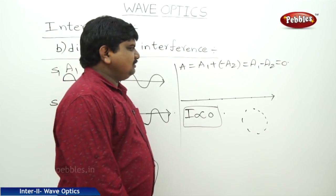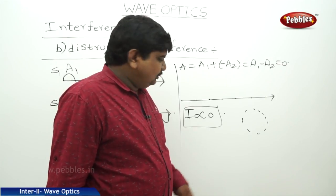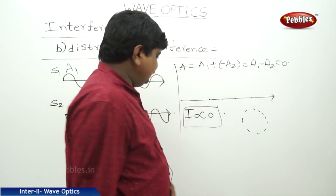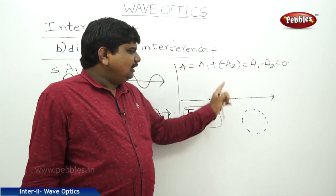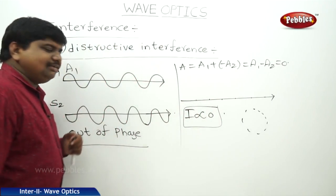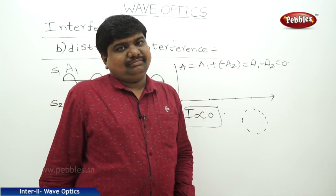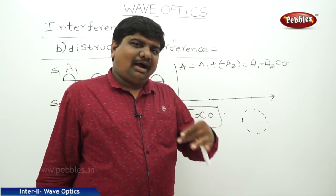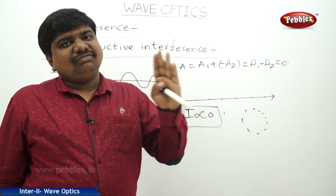A1 minus A2 is equal to zero, so the intensity IE is proportional to zero, meaning the amplitude is zero and the resultant wave is a straight line. This is the difference between constructive and destructive interference — destructive interference produces dark bands while constructive interference produces bright bands, which alternate to form the dark and bright fringe pattern.